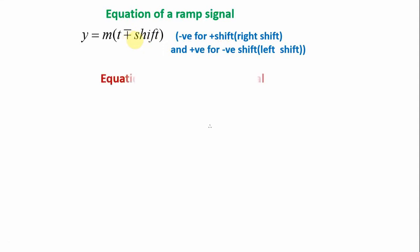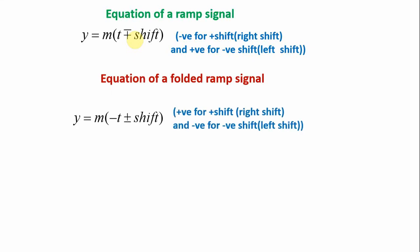This is for the ramp signal and for a folded ramp signal it can be written by means of the straight line given by m into minus t plus or minus shift where positive sign shifts it to the right, negative sign shifts it to the left.